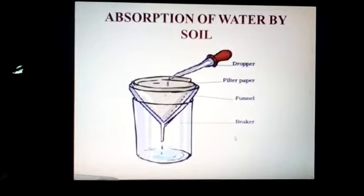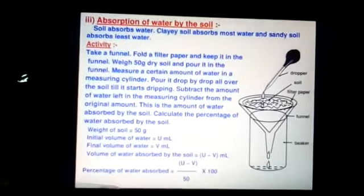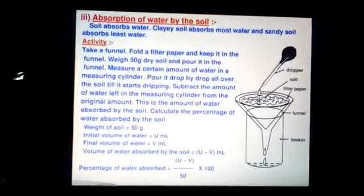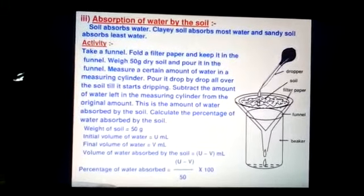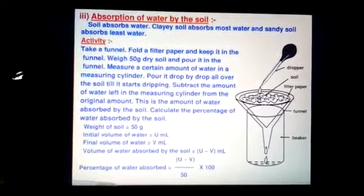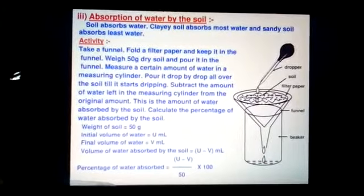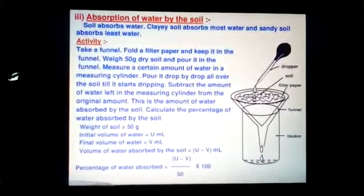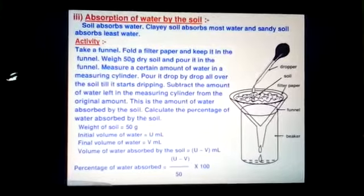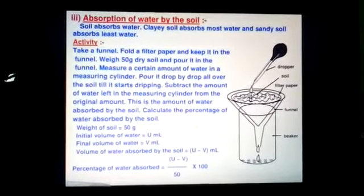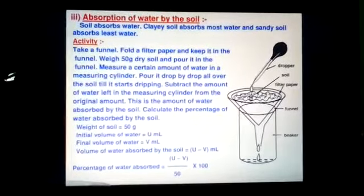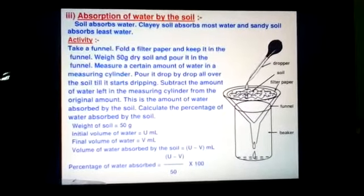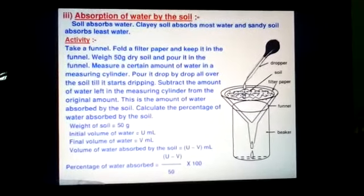Now, how can we calculate how much water is absorbed by the soil? We can find this out by subtracting the amount of water left in the beaker from the amount we started with initially. This gives the amount of water retained by the soil.